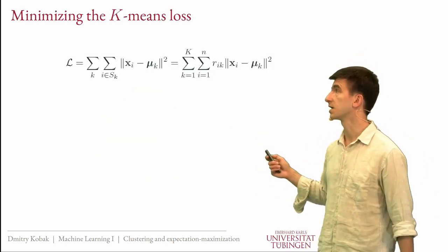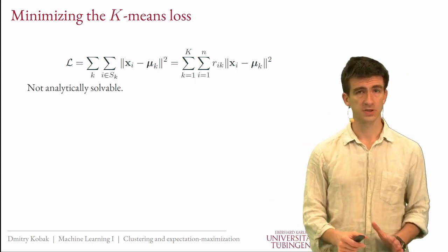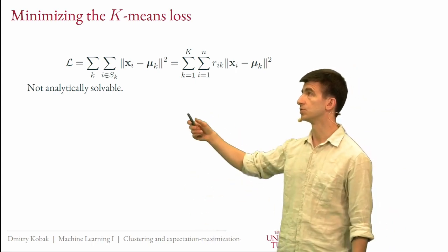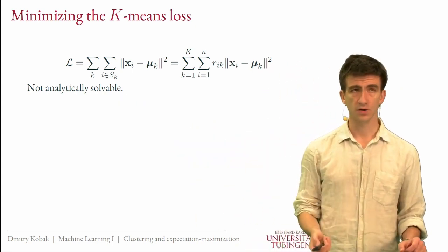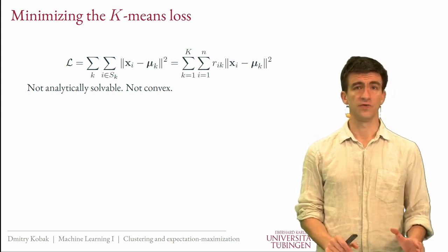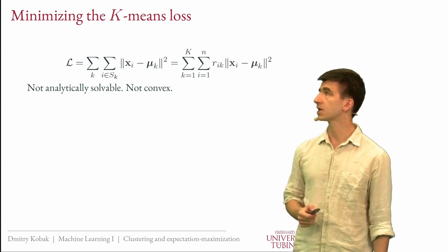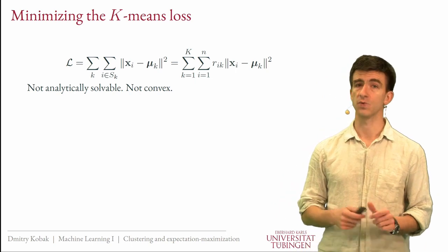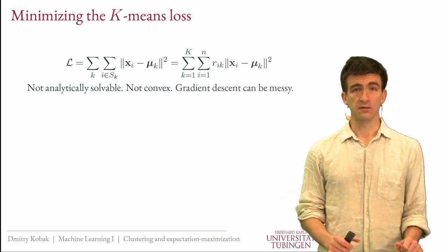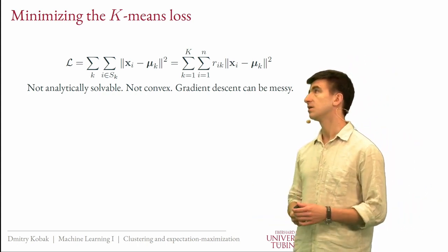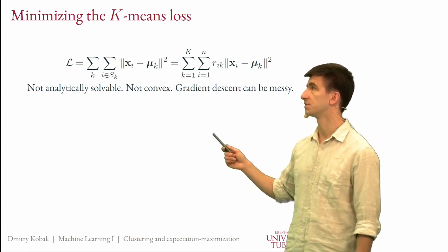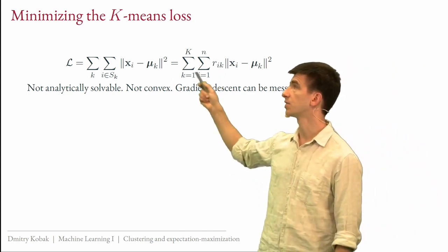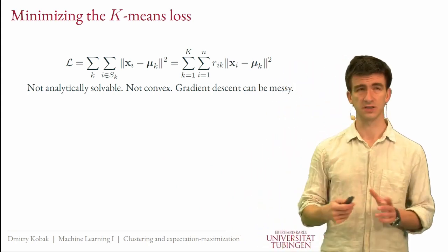How do we minimize the k-means loss? The first piece of bad news is that it is not analytically solvable — there is no formula for the optimal mu's and assignments for an arbitrary dataset. The second piece of bad news is that it is not convex; it is badly non-convex with many local minima. The third issue is that gradient descent is messy because taking derivatives with respect to the discrete cluster assignment variables is not straightforward.